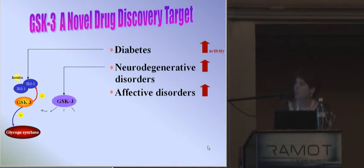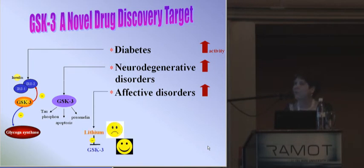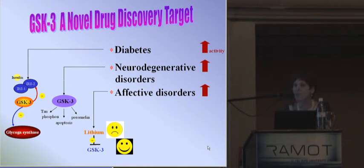In neurodegenerative disorders, GSK3 phosphorylates tau; it is a pro-apoptotic enzyme and also interacts with presenilin and other neuroproteins, all of which are important parameters in Alzheimer's disease and other neurodegenerative disorders such as Parkinson's and Huntington's disease. Lithium is a known mood stabilizer frequently used for treatment of bipolar disorders, and lithium is an effective inhibitor of GSK3. Recent studies show that GSK3 is an in vivo target of lithium, and therefore GSK3 is also implicated in affective disorders.